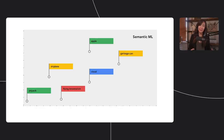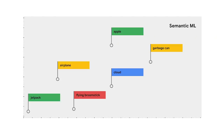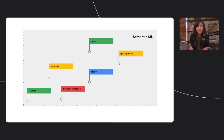Embeddings are a way of taking a type of data and mapping it to space — maybe a two-dimensional space, maybe a higher-dimensional space — such that points that are close to each other are similar. In a word embedding, similar words are plotted near each other. So 'jetpack' doesn't have anything to do with 'apples,' so they're far apart. But a jetpack is kind of like a flying broomstick, and it's kind of like a cloud, so they're all close together in space. We can then use an algorithm to say if things have a close distance, maybe they're related. You can calculate distance using Pythagorean's theorem, Euclidean distance — there are lots of ways.